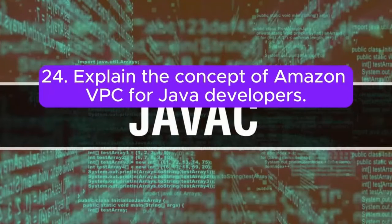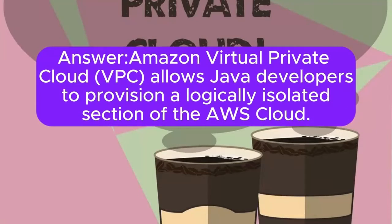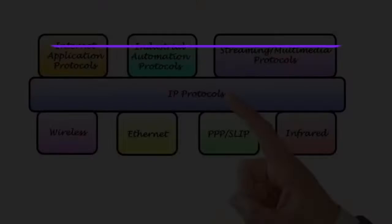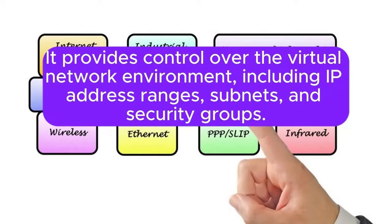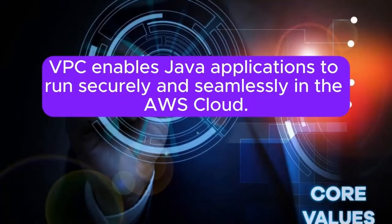Question 24: Explain the concept of Amazon VPC for Java developers. Amazon Virtual Private Cloud VPC allows Java developers to provision a logically isolated section of the AWS cloud. It provides control over the virtual network environment, including IP address ranges, subnets, and security groups. VPC enables Java applications to run securely and seamlessly in the AWS cloud.